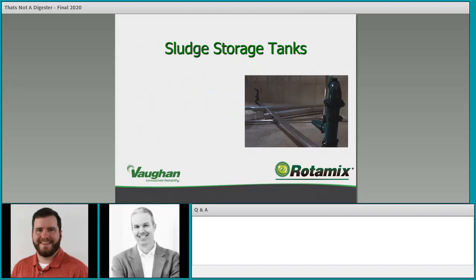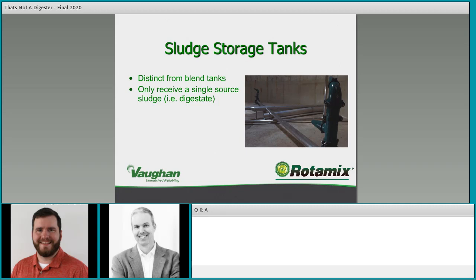Now let's talk about sludge storage tanks. These can appear everywhere in the facility, but they're distinct from blend tanks because they're generally only receiving a single source sludge — most commonly digestate. It might be chemical waste, manure waste, separate primary and waste activated sludge tanks, lime slurry, or lime sludge from a water facility. The key distinction from a blend tank is you're only receiving one sludge, so you're not focused on blending — you're just focused on keeping it in suspension.